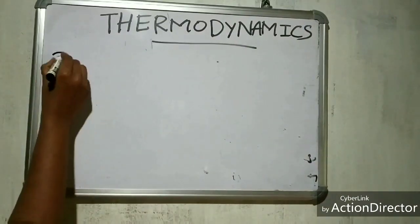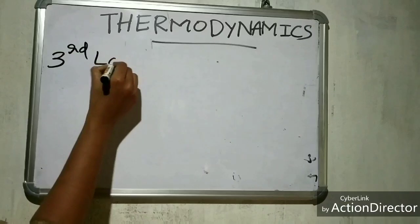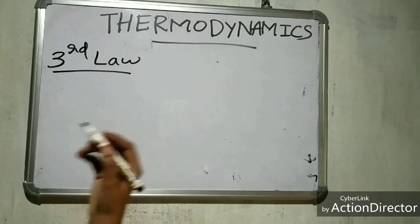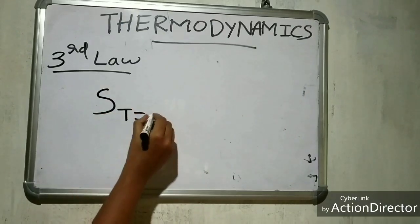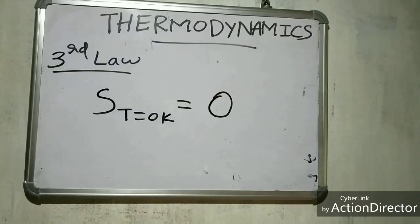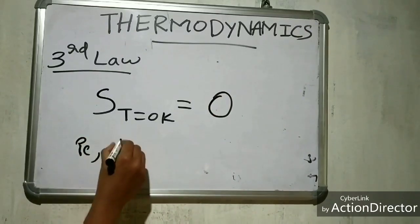The third law: The entropy of a pure perfectly crystalline compound at zero Kelvin is zero. That is no disorder.